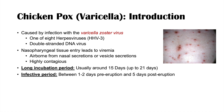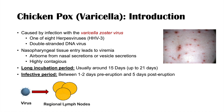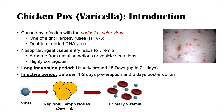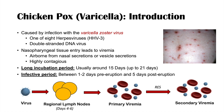The virus gains entry through nasopharyngeal tissue and multiplies in regional lymph nodes between days four to six. Afterwards, the virus leads to a primary viremia — virus in the blood — and then enters the reticuloendothelial system, or RES. Eventually there is a secondary viremia occurring at around day nine, and after the incubation period completes, we start to see eruption of vesicles.